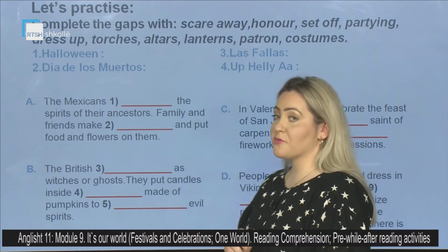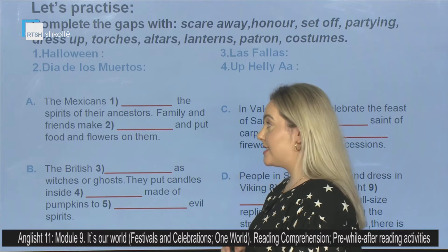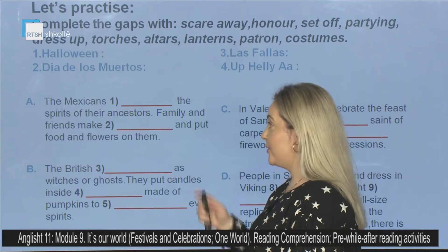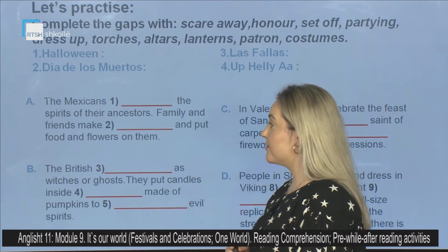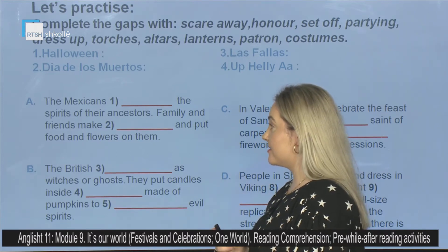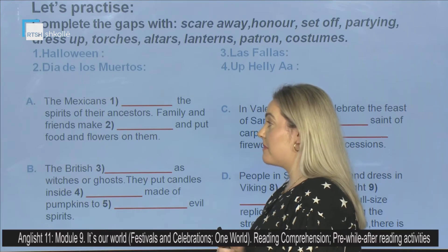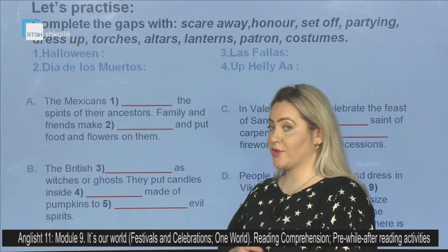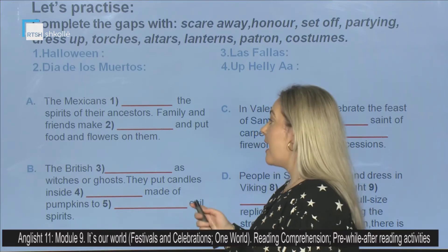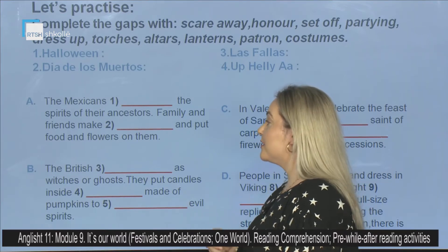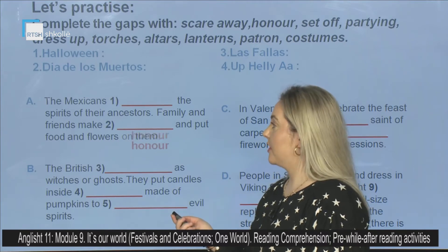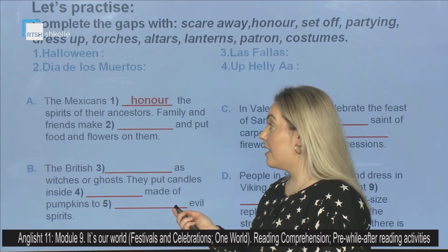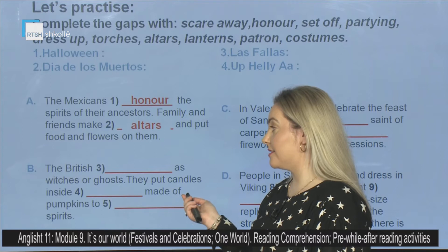First one, or A: The Mexicans — you should complete it — the spirits of their ancestors. Family and friends make — you should complete it — and put food and flowers on them. The answers are: one, honor; two, altars.